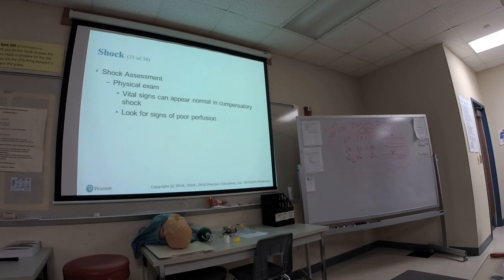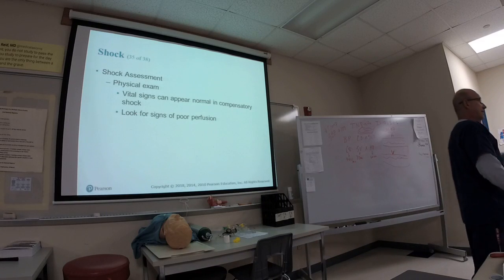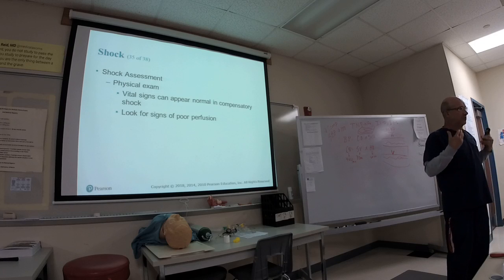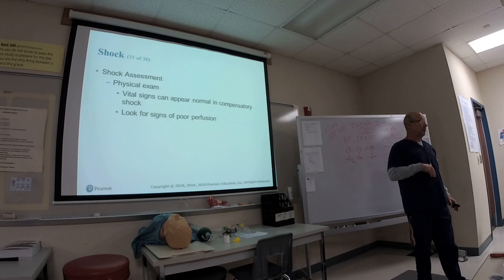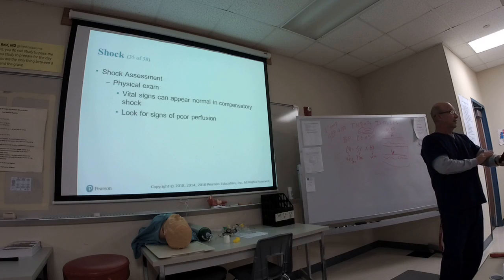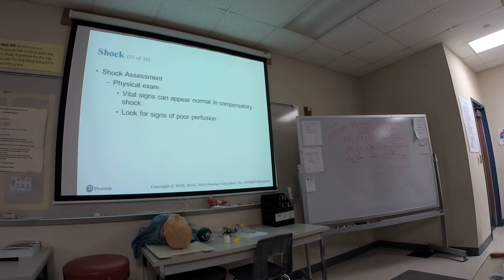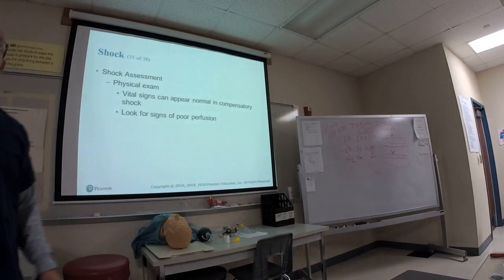In neurogenic shock: warm skin and bradycardia. In hypovolemic shock: tachycardia and pale, cool, clammy skin from fluid loss. Circulating blood flow helps keep us warm, so losing it causes cool skin. There are detailed charts in your book for each type — study them carefully as they are very important indicators of hypovolemic shock.